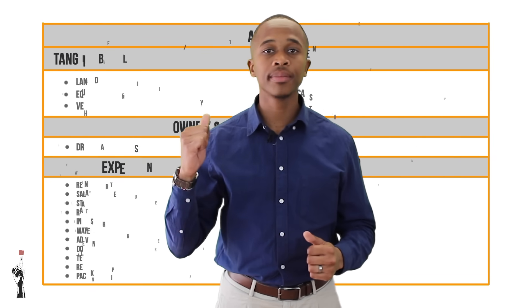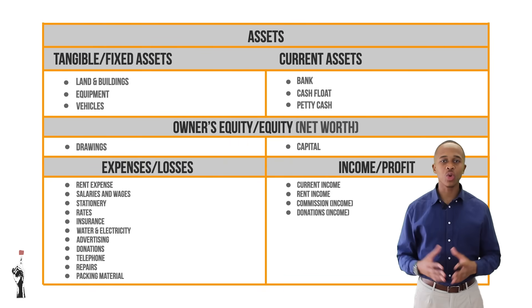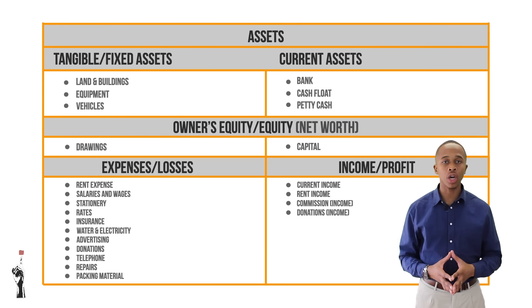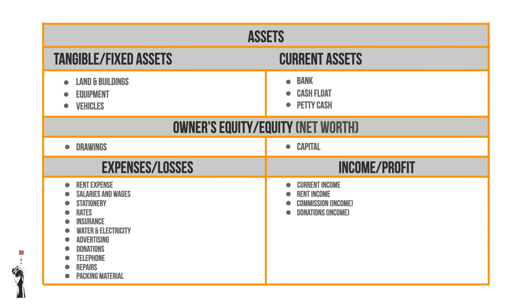Do you still remember the table behind me? As you can recall, this table is one of the things you need to know off by heart in accounting. For instance, it is important to know that a vehicle is an asset — this will allow you to understand where to record it on the general ledger.